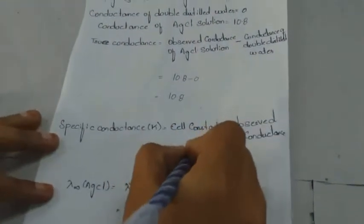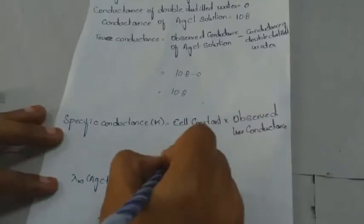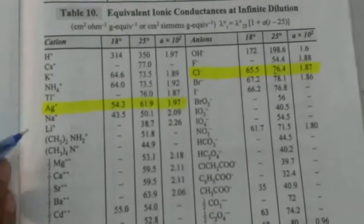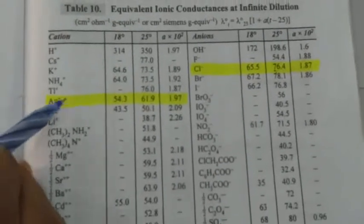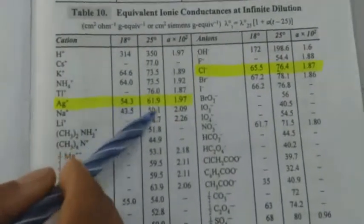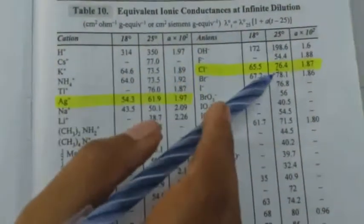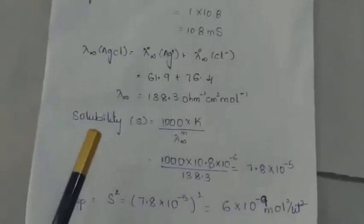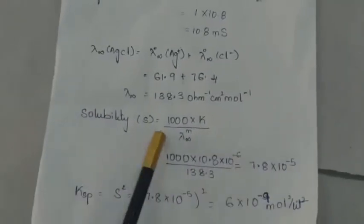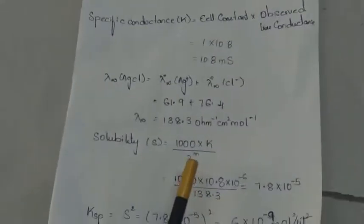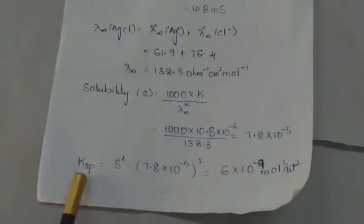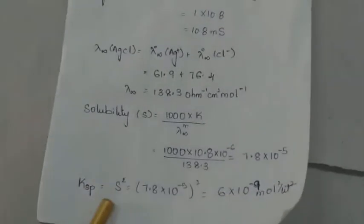The specific conductance value is 1. The equivalent conductance at infinite dilution of Ag⁺ ions at 25°C is 61.9 and of Cl⁻ ions at 25°C is 76.4. By adding them we get the equivalent conductance of silver chloride at infinite dilution. Using the formula: solubility S = (1000 × specific conductance) / equivalent conductance at infinite dilution, we can calculate the solubility product of the sparingly soluble salt silver chloride.